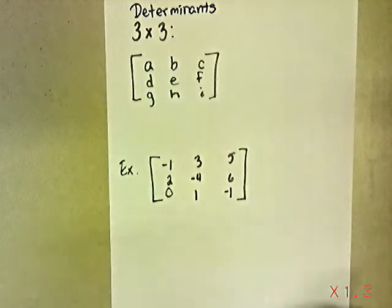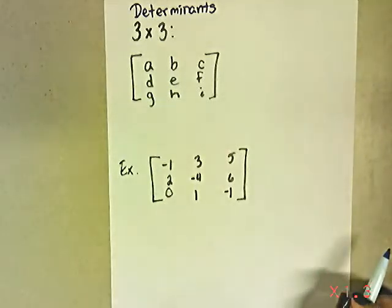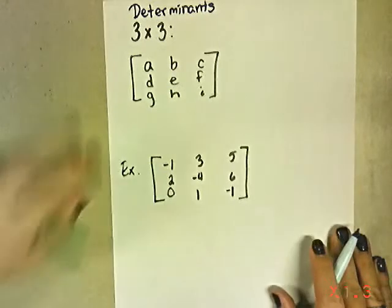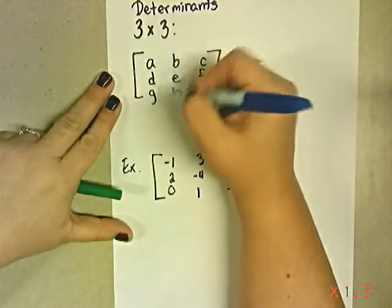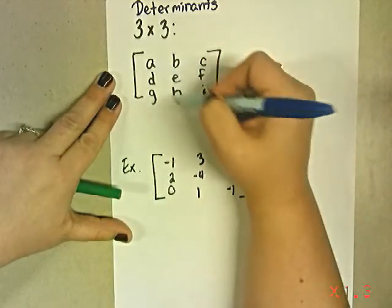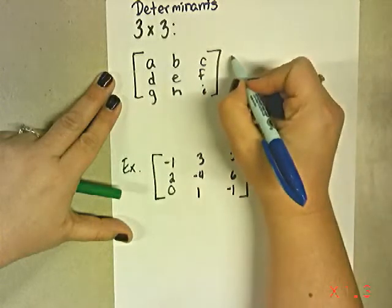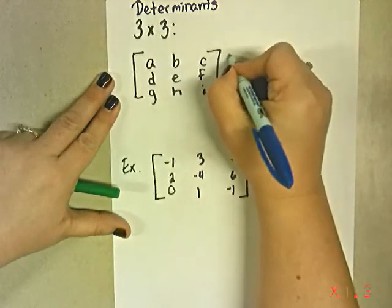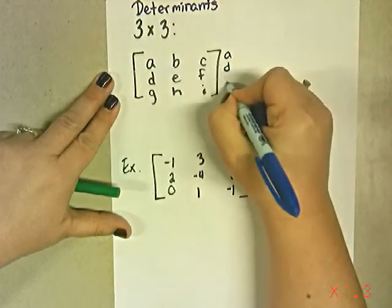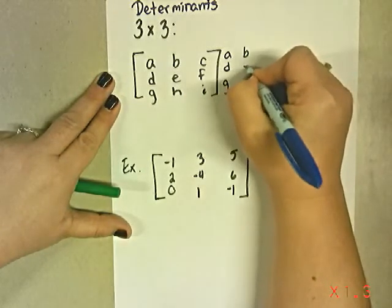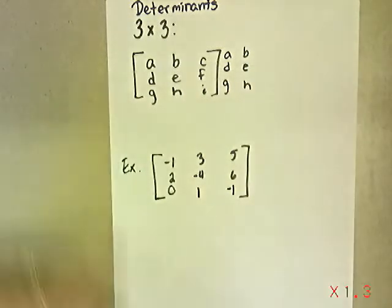So there's a couple different ways to multiply 3x3 determinants, but this is the way that I like to do it. You copy your first column and your second column again behind your matrix. So I'm just going to take that first column, copy it down, second column, copy it down.